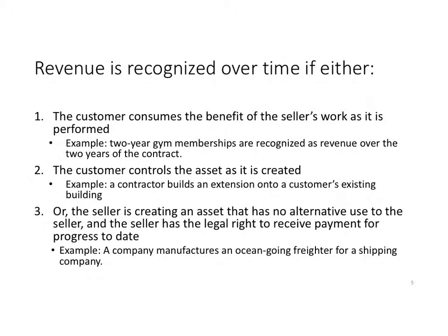Revenue is recognized over time if the customer consumes the benefit of a seller's work as it's performed. For example, two-year gym memberships are recognized as revenue over the two years of the contract. If the customer controls the asset as it is created — for example, a contractor builds an extension onto a customer's existing building — then since the customer is essentially controlling the extension, the contractor can recognize revenue as they're completing the contract.